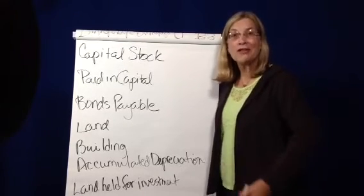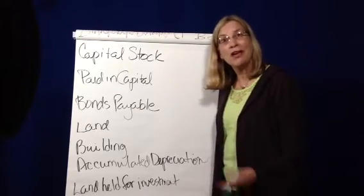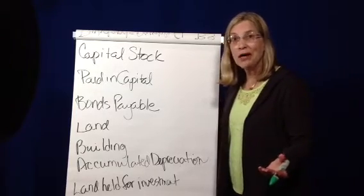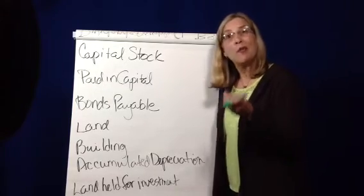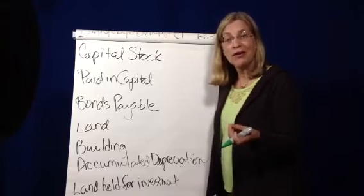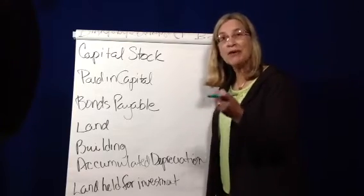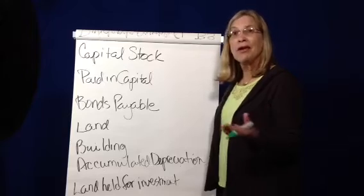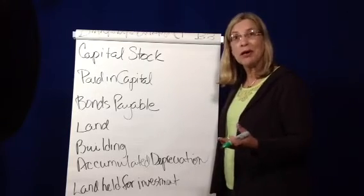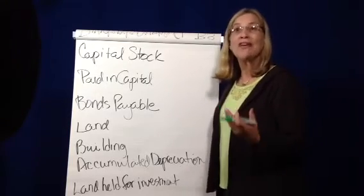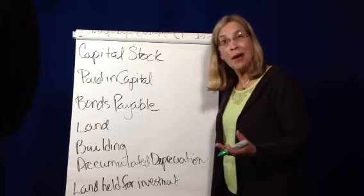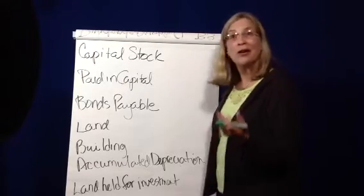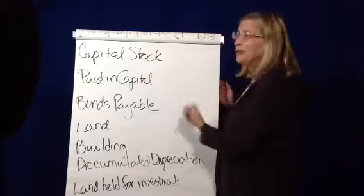We're looking at different kinds of accounts and identifying what financial statement they're on and what type of account it is. If I understand what type of account it is, I can also figure out from a cash flow standpoint what kind of activity it is — whether it's operating, investing, or financing. So let's take a look at capital stock.